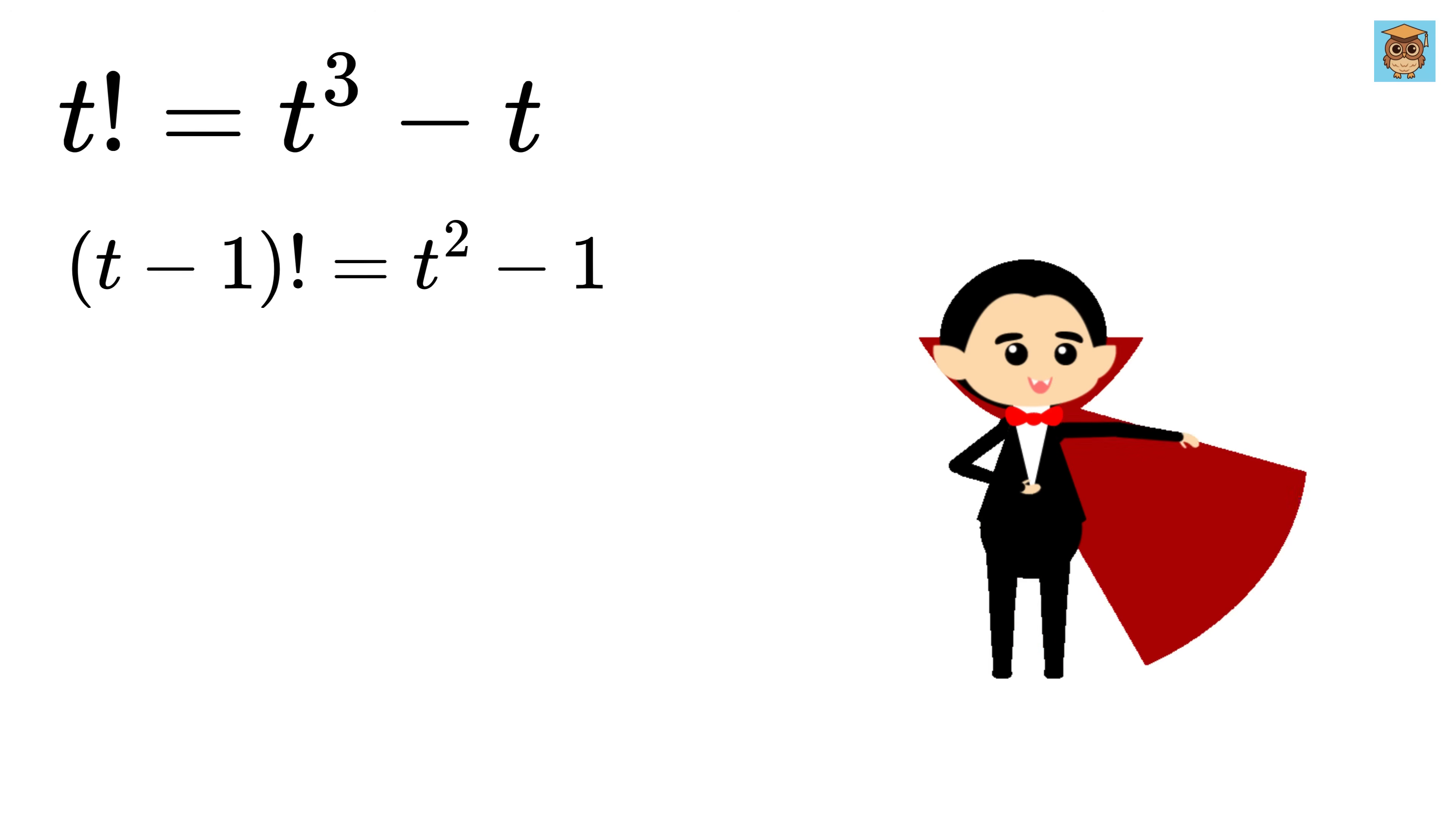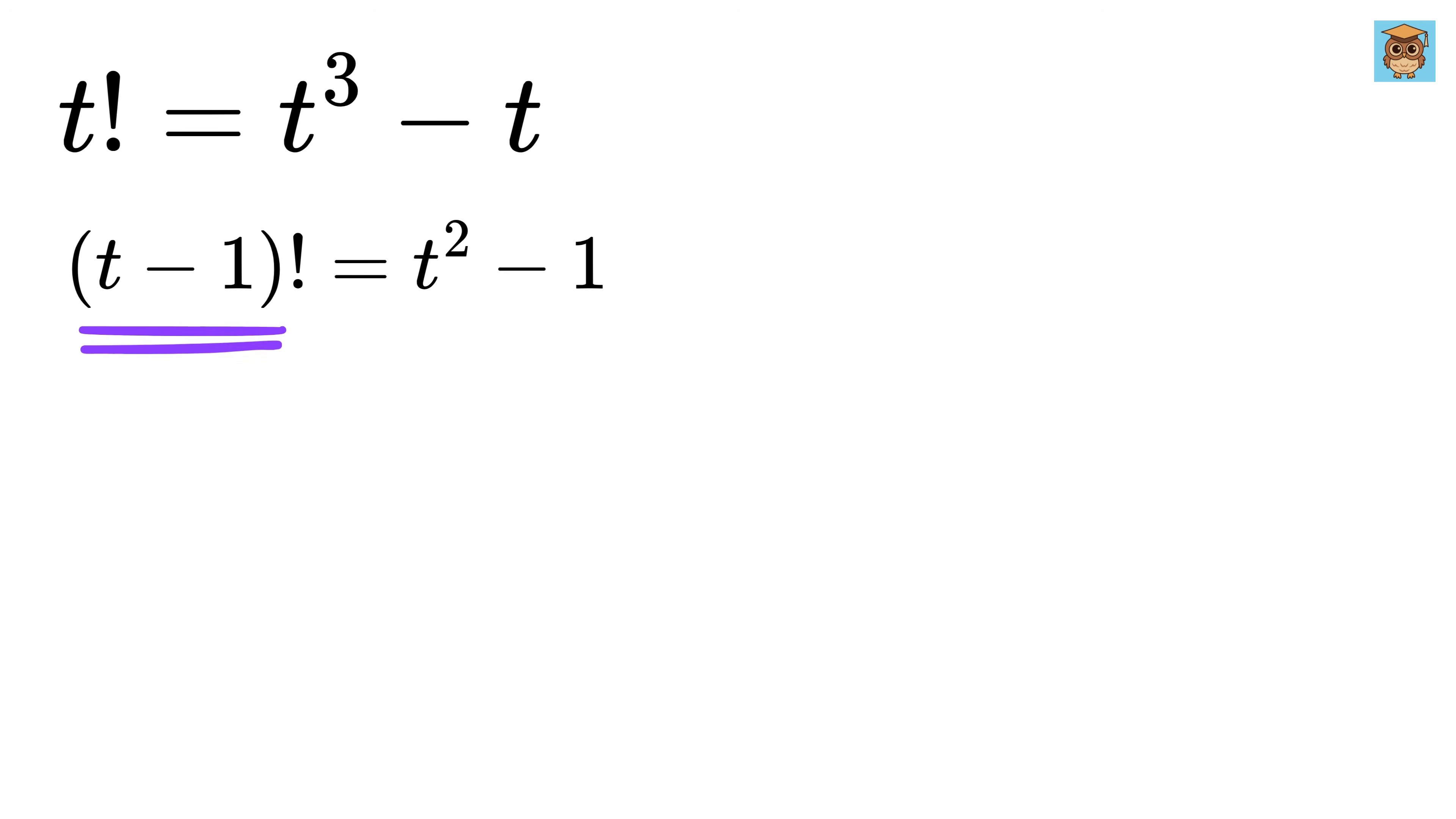Now, here comes the real magic. We can again rewrite this t minus 1 factorial as t minus 1 times t minus 2 factorial. And this right-hand side can be written as t square minus 1 square. So this is of the form a square minus b square, which is equal to a minus b times a plus b, so this will become t minus 1 times t plus 1. Noice!